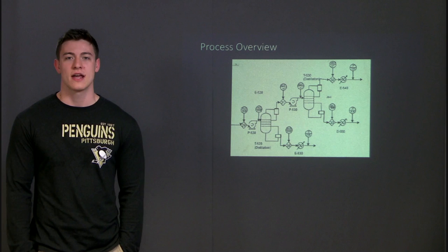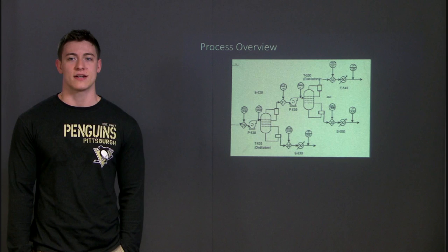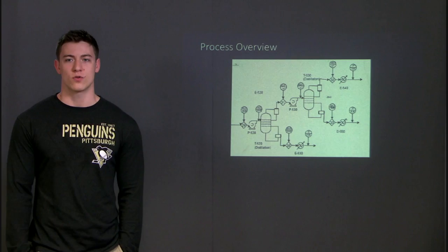The final product, Stream 32, contains 99.95% jet fuel by mass and has a flow rate of about 22,000 pounds per hour, and then this stream is sent off to the OBL for storage. And now Mario is going to talk about the economics of the jet fuel plant.